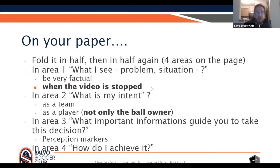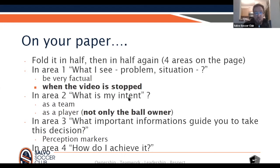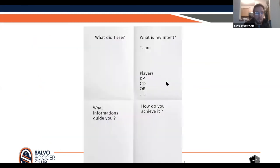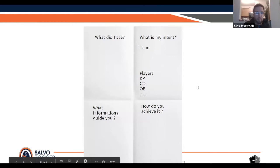And after, the fourth part: how do you want to achieve your intent? So this is the full four-part framework. Any questions about that you can write in the chat - ask me or ask everyone. So first: what did I see? Based on that, what is my intent - not only the ball owner but as a team and the players. Why did you make this choice? And how do you want to realize it? Here is an example of the sheet of paper you could have.